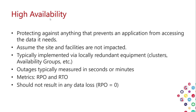High availability, on the other hand, means avoiding any interruption in your business — protecting against anything that prevents an application from accessing the data it needs. You assume the site and facilities are not impacted, so you have access to the same facility. It's typically implemented with locally redundant equipment: clusters, availability groups, etc.